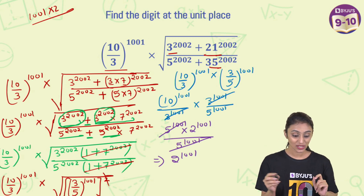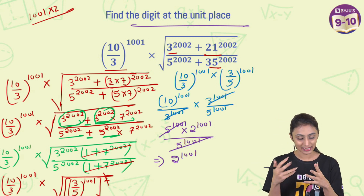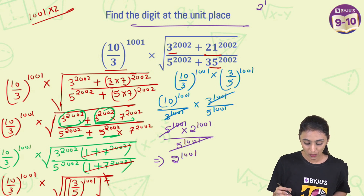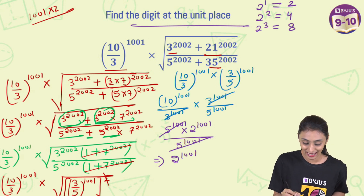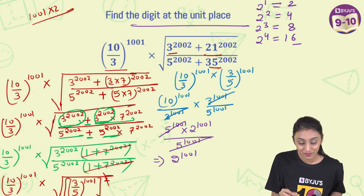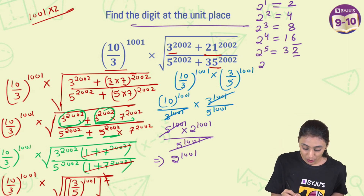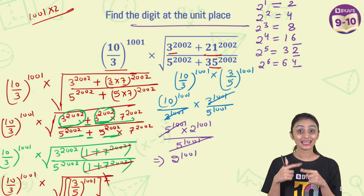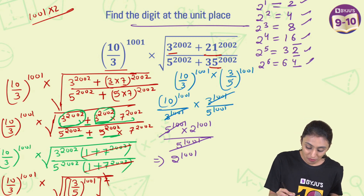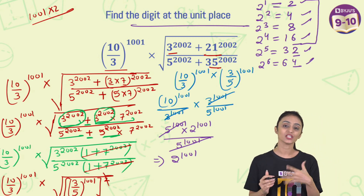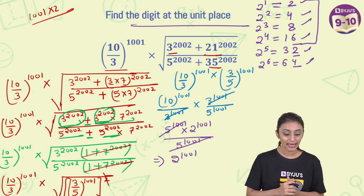We've simplified the expression but we're not done yet — the question asks for the digit at the unit's place. So let's talk about the cyclicity of 2. 2 to the power 1 is 2, 2 squared is 4, 2 to the power 3 is 8, 2 to the power 4 is 16 (units digit 6), 2 to the power 5 is 32 (units digit 2), 2 to the power 6 is 64 (units digit 4). The units digit repeats in a cycle of 2, 4, 8, 6 — so the cyclicity of 2 is 4.